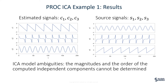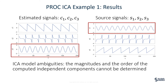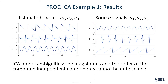Also, notice that the order of the computed independent components does not match the order of the source signals. For example, the source signal s1 is estimated by the independent component c3, not c1. This example demonstrates the ambiguities of the ICA model, where the magnitudes and the order of the computed independent components cannot be determined.